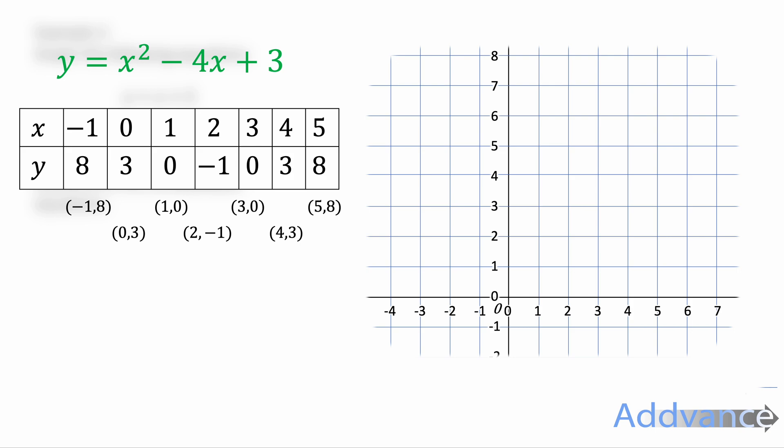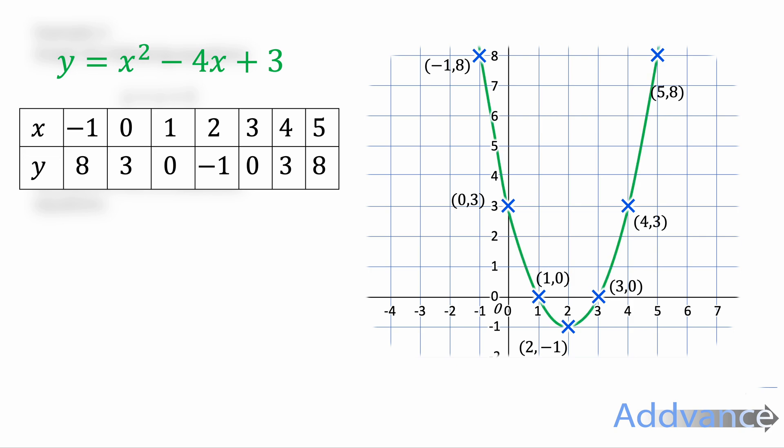And so x equals minus 1 and y equals 8 gives me the coordinate minus 1, 8. 0, 3 gives me 0, 3. I can now start plotting those coordinates. So I put minus 1, 8 at the coordinate minus 1, 8, then 0, 3, 1, 0, 2 minus 1, 3, 0, 4, 3, and 5, 8. And you should see it makes a nice u shape like a normal quadratic. It looks like this. Perfect. That's how we expect quadratics to look.